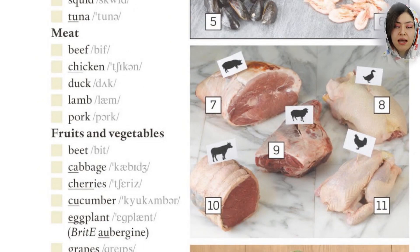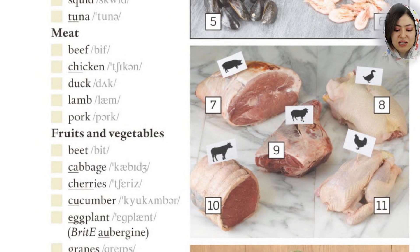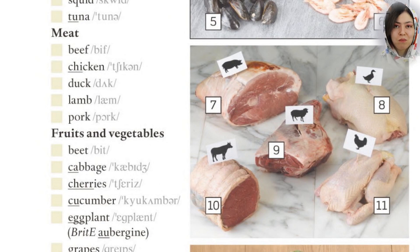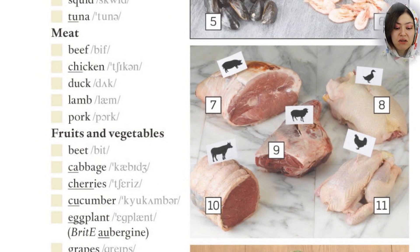The second category shows different types of meat. You can see a variety of meat here. The first one is beef. Then chicken. Duck. Lamb — the B is silent. And pork. That's the end of the meat category.